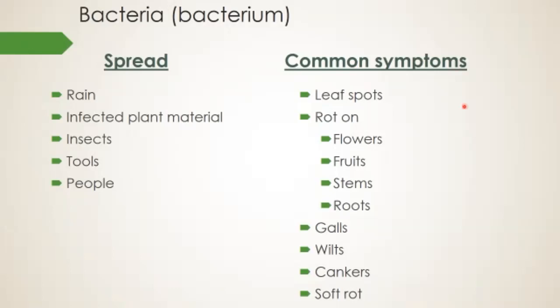Common symptoms of bacterial disease include leaf spots, mold, and rot — rot is essentially necrosis. Something like downy mildew has the word 'mildew,' so you might think it's a fungus, but it's actually caused by bacteria. Rot on flowers, fruits, above-ground tissues, and roots is quite common. Galls, wilts, cankers, and soft rot can all also be bacterial symptoms, and these can be confused with other issues.